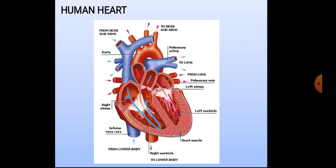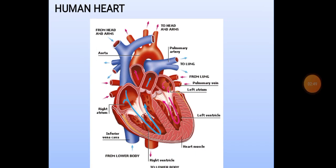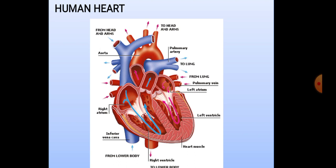Blood is a fluid tissue that flows in special tubes called blood vessels. Plasma is the fluid part of blood, which contains 90% water. It is pale yellow in color and carries nutrients, enzymes, and waste materials. The heart is the central organ for pumping blood throughout the body.